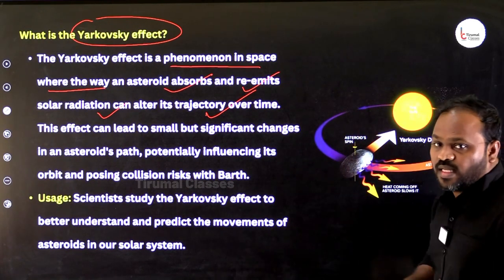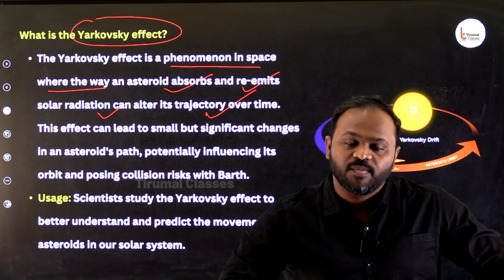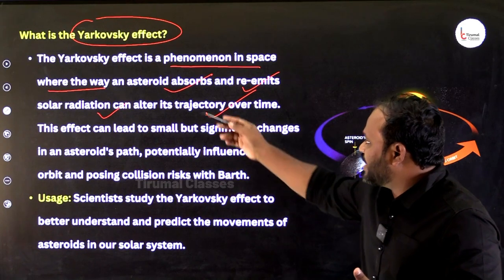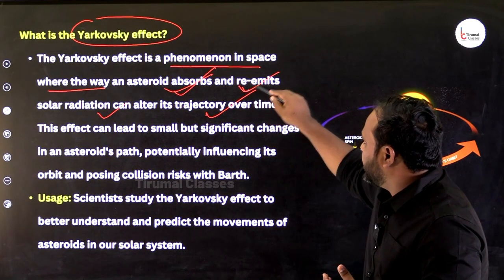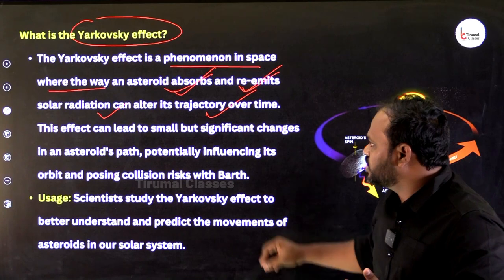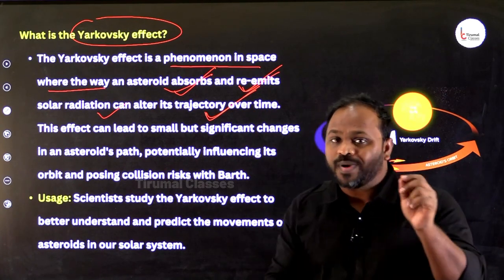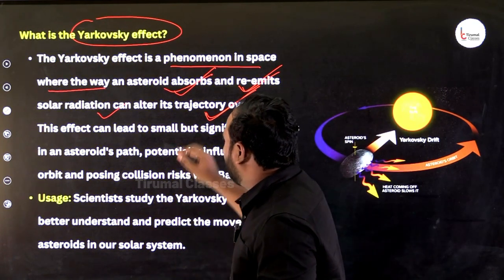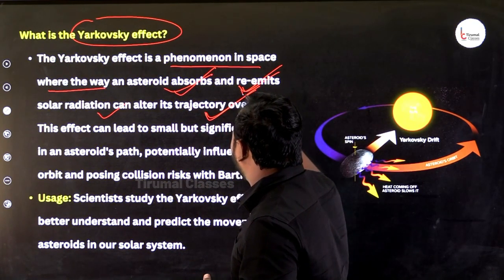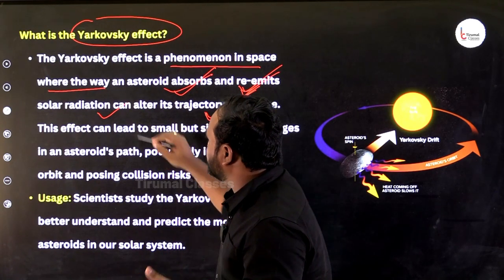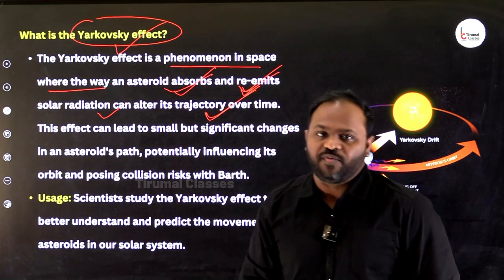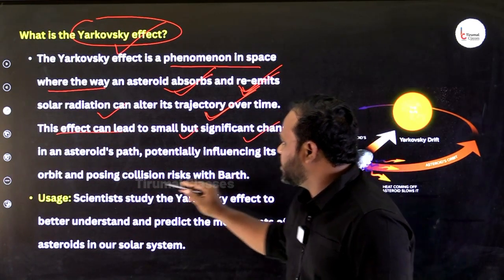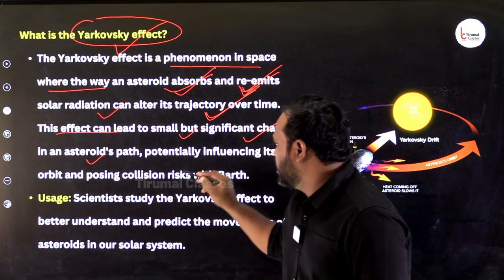The Sun emits incoming solar radiation. Asteroids absorb this solar radiation and then re-emit it. This absorption and re-emission can alter the trajectory or path of the asteroid. The altering of an asteroid's path by absorbing and re-emitting incoming solar radiation is called the Yarkovsky Effect.